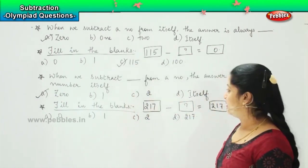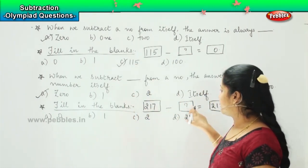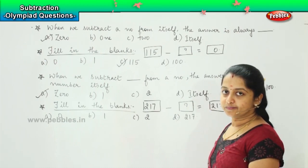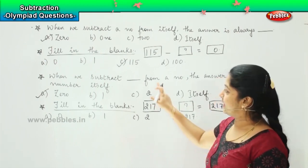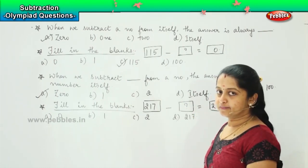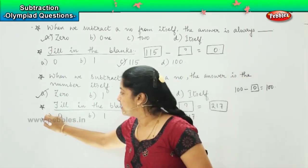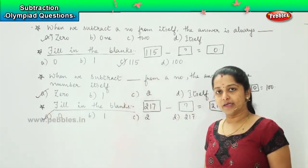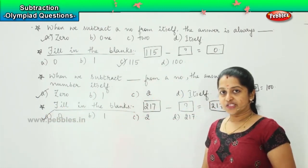So what is the right answer here? 217 minus something equals to 217? So this is exactly the principle which we did earlier. So the answer is yes, it is a) 0. Clear? Shall we move to the next one?